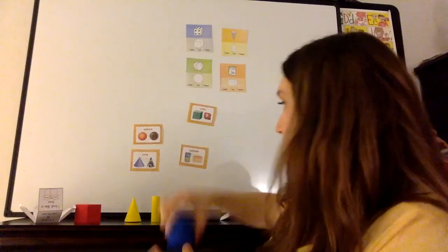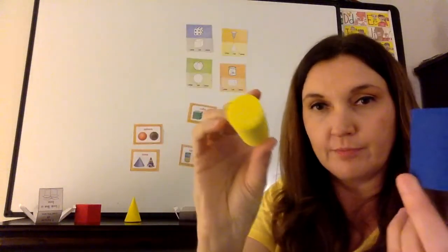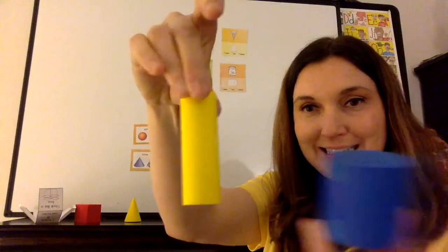Here's two examples of a cylinder. One's a fat one. Long skinny one. Cylinders.